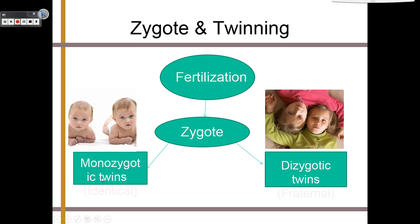Dizygotic twins are similar, but they didn't go through the same process. During the fertilization period, two eggs were fertilized by two different sperm. These twins are essentially siblings growing or being developed in the womb at the same time. Monozygotic means one zygote, and dizygotic means two zygotes.